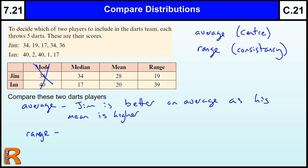Now Ian has a much bigger range, so he's inconsistent and therefore this range is 39. Jim is more consistent.